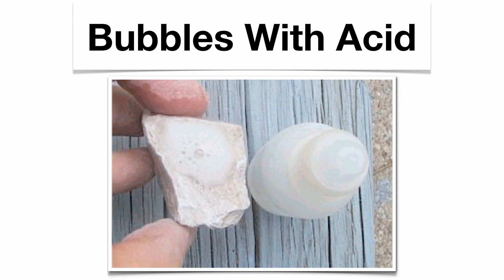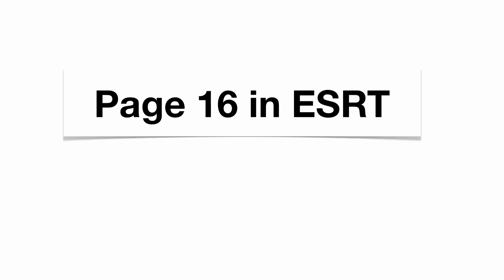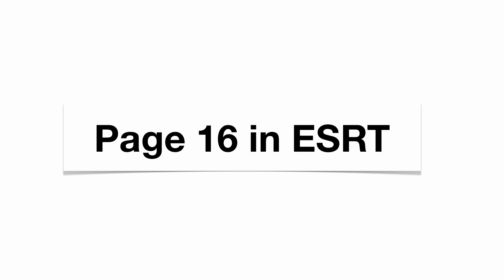Calcite, which has a multitude of properties, also reacts with hydrochloric acid — you get bubbling when acid is put on it. A lot of these values and properties are going to be found on page 16 in your Earth Science Reference Table, so make sure you know how to read that.